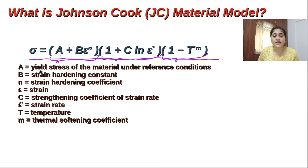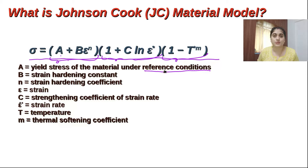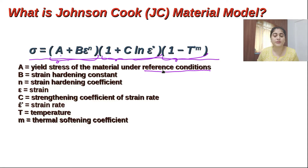What is A? A is showing the yield stress of material under the reference condition. Generally this condition is taken as a quasi-static process, which finds properties using a UTM machine, and this is also called a reversible process. Why? Because it's a very slow process — you are applying a very small load very slowly, so the material has time to regain its position.